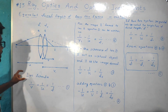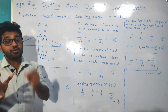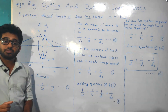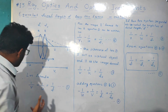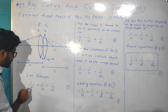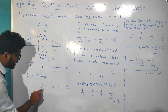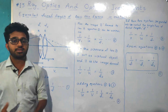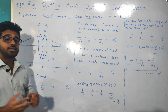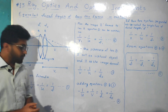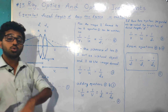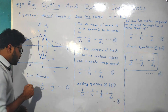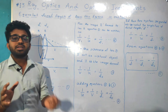Now we have the lens formula, which is given by: 1 by v minus 1 by u equals 1 by f, where f is the focal length, u is the object distance, and v is the image distance.